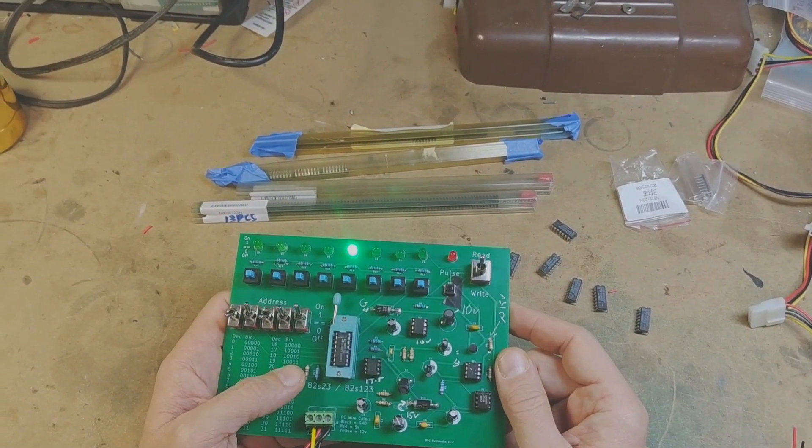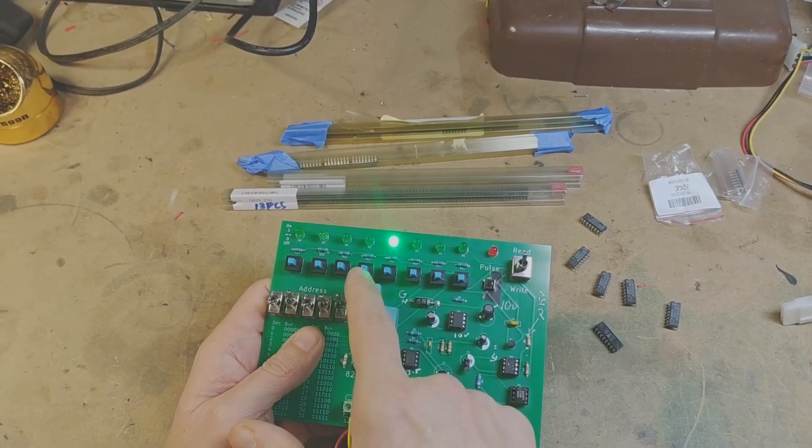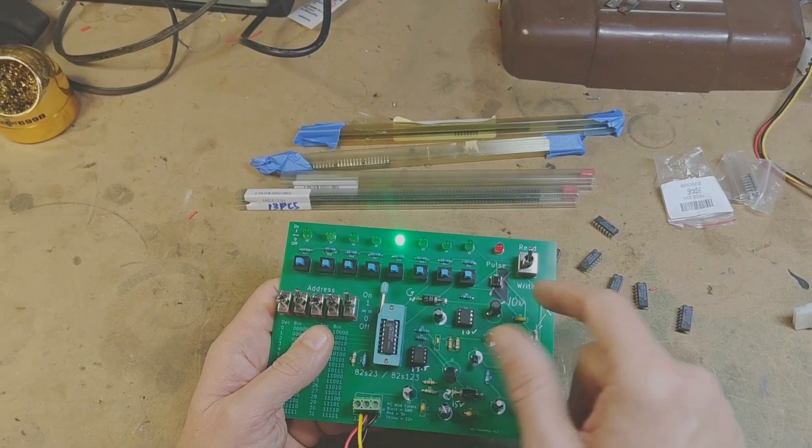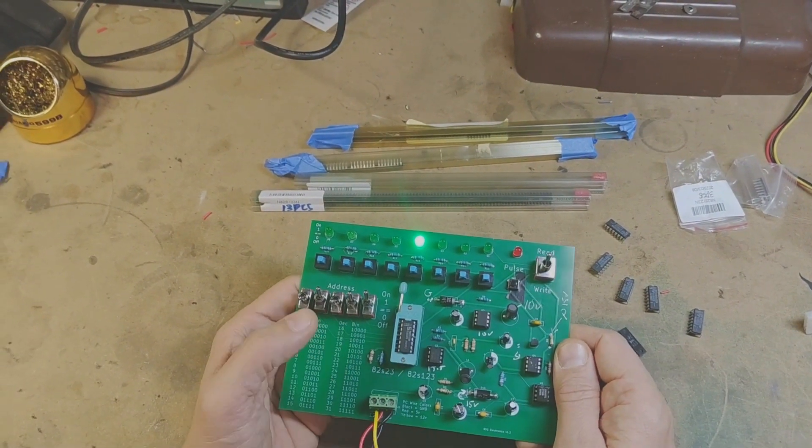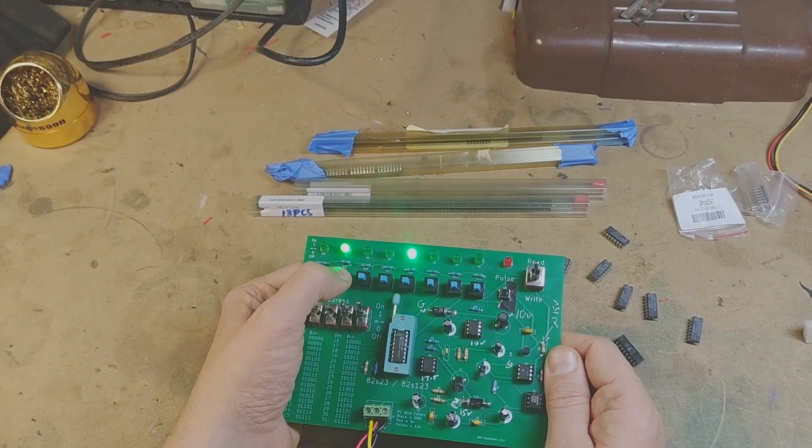I'm gonna go into read mode and you can see at this address I do have some data on here. All zeros, that one, and then these are all zeros. So if I wanted to write another location, let's say I want to write this one. You can see I'm pressing the button and the light comes on.